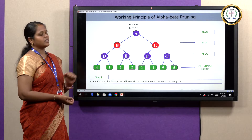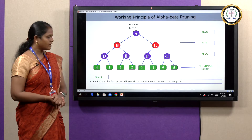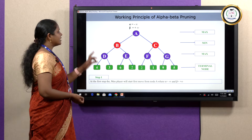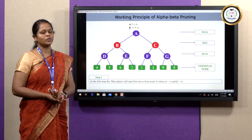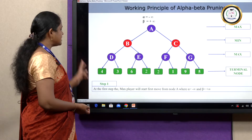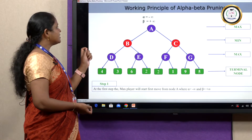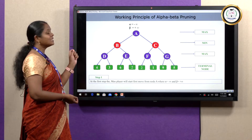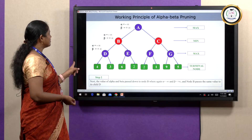Now we get into the working principle of alpha-beta pruning using a two-player game tree with a max player and a min player. The leaf nodes are considered terminal nodes. The max player updates only the alpha value, and the min player updates only the beta value. We start from node A with alpha equals minus infinity and beta equals plus infinity. The same values are passed to node B and node D.